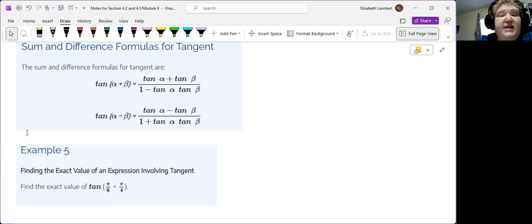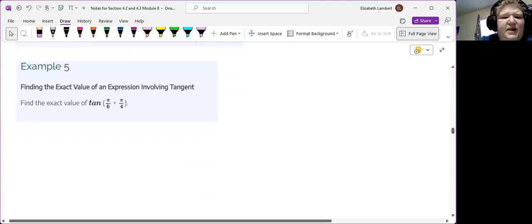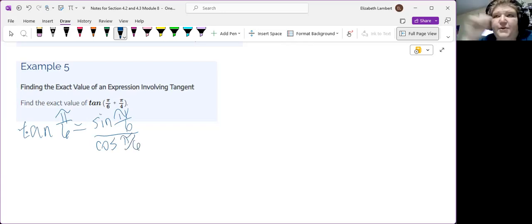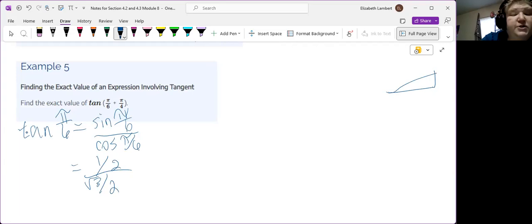All right. So, the exact value of tangent of a plus b. We're going to have to figure out the tangent of pi over 6 and the tangent of pi over 4. Let's just go ahead and do that now. Tangent of pi over 6 is the sine of pi over 6 over the cosine of pi over 6. Pi over 6 is, of course, our 30 degree angle. So, this is long side, short side. The cosine is the square root of 3 over 2. The sine is the 1 half. So, 1 half over square root of 3 over 2. So, 1 over the square root of 3. Which, if we rationalize times root 3 over root 3, we would get root 3 over 3. So, there's our tangent of pi over 6.